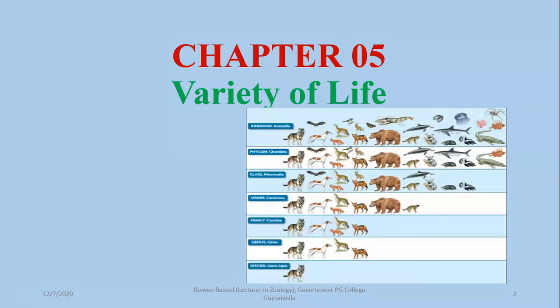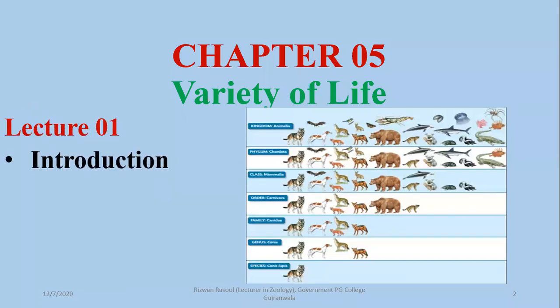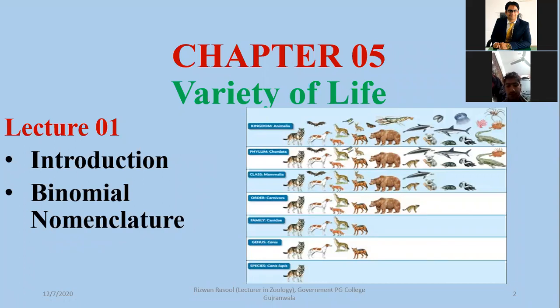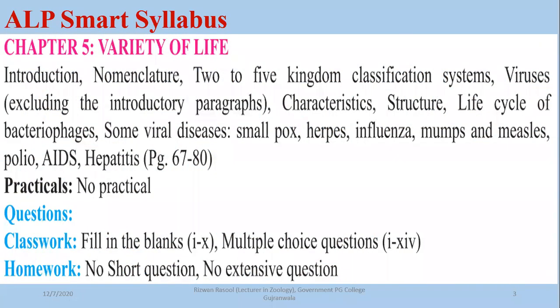The topics we are going to discuss in this chapter include the introduction of biodiversity or variety of life, binomial nomenclature, and names of different plants and animals according to binomial nomenclature. If you look at your syllabus, this is part of your ELP.